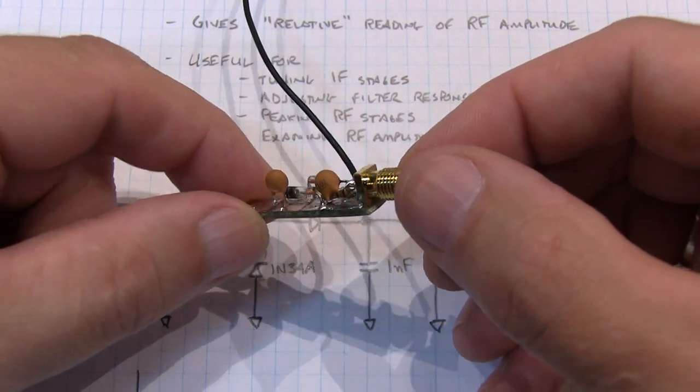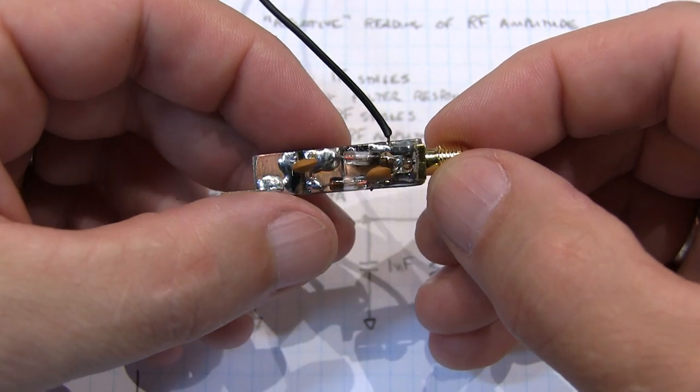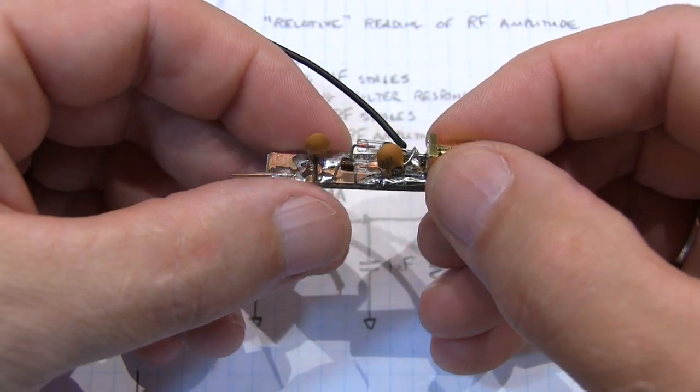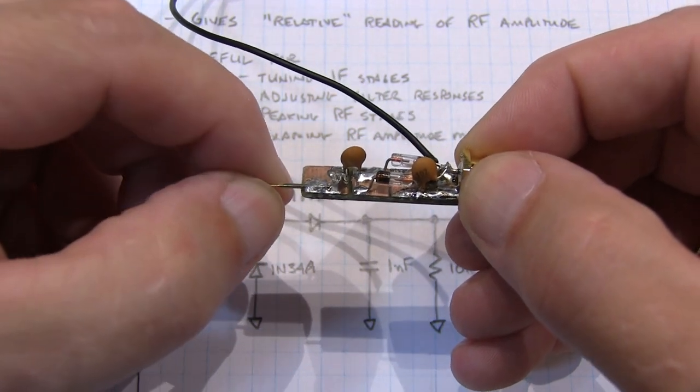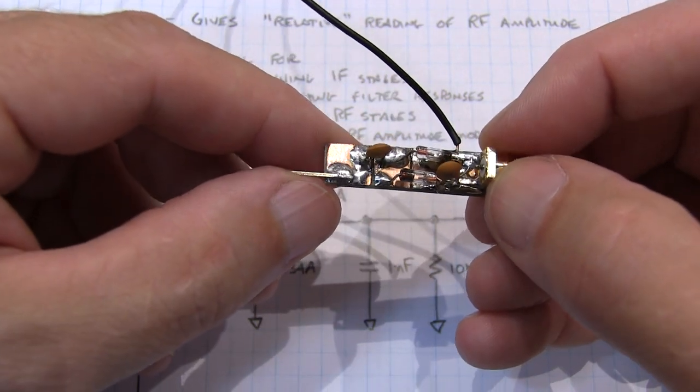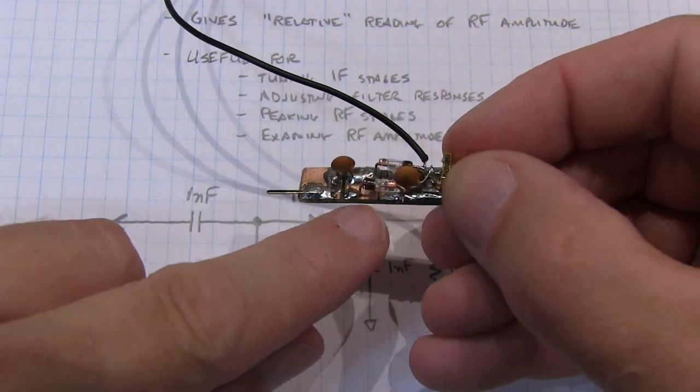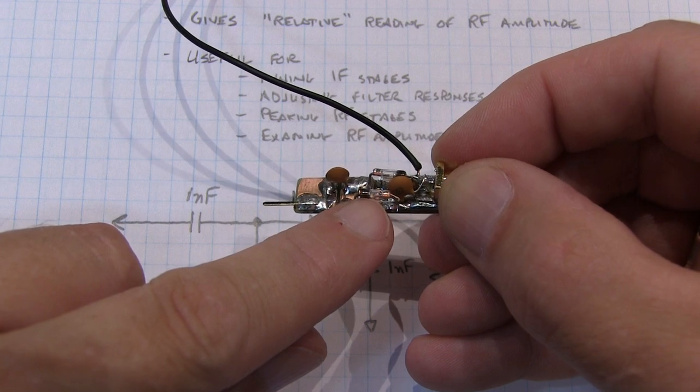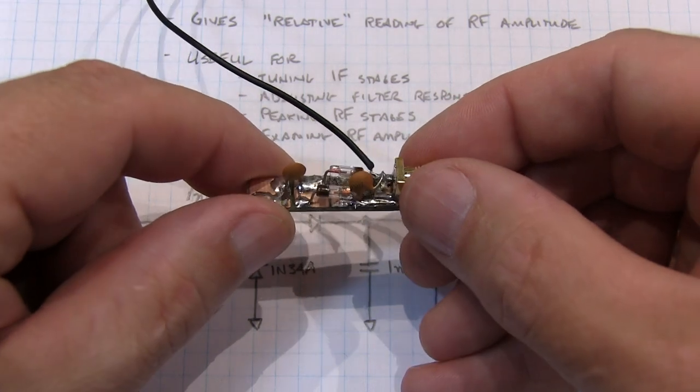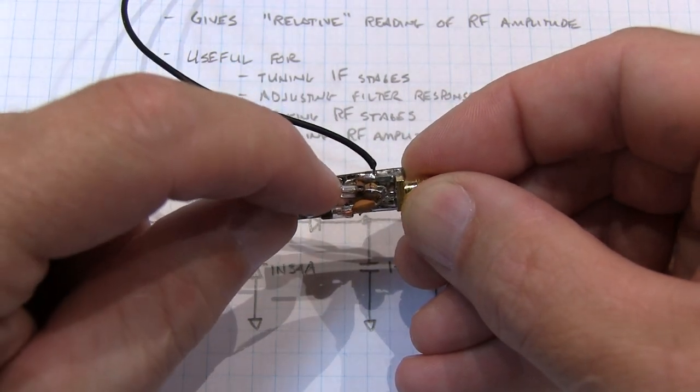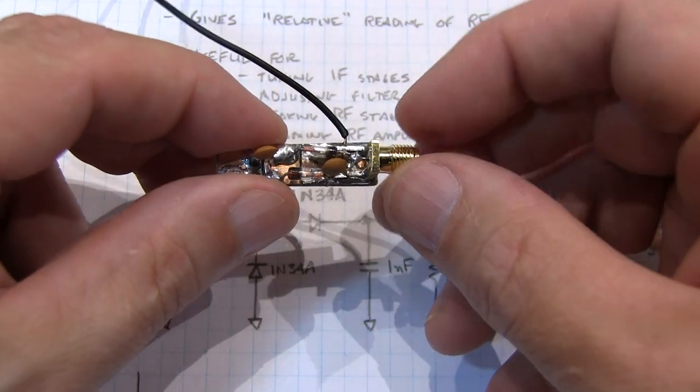So I've just got a little SMA connector on this end here, soldered to ground on the board. And for the input, for the probe, I just used a little square header pin and it makes a nice little stiff probe tip. So there's the 1 nF input capacitor right here. And then these are the two diodes, 1N34A here, and that one is going over to ground.